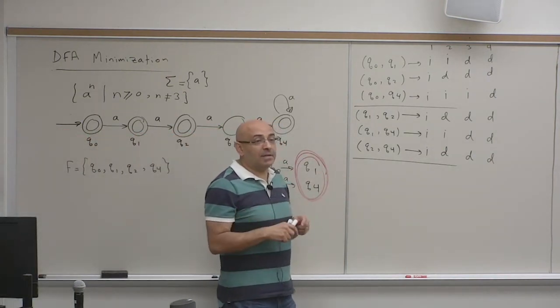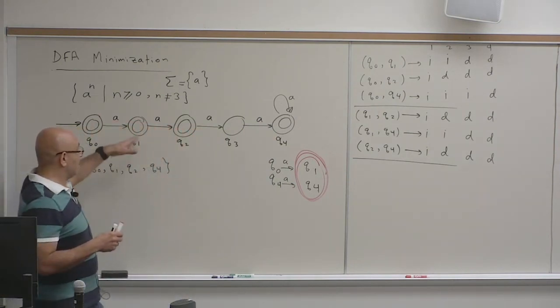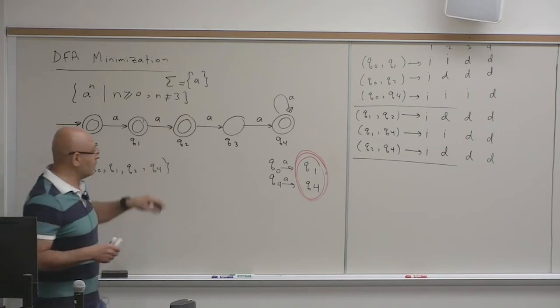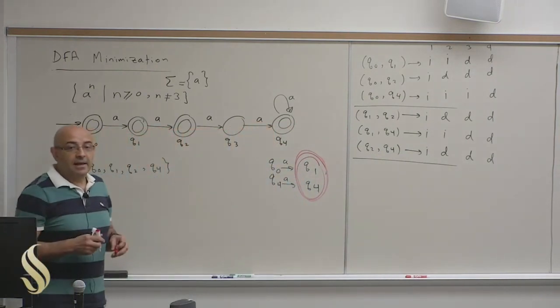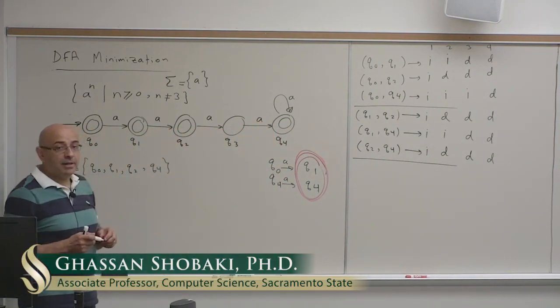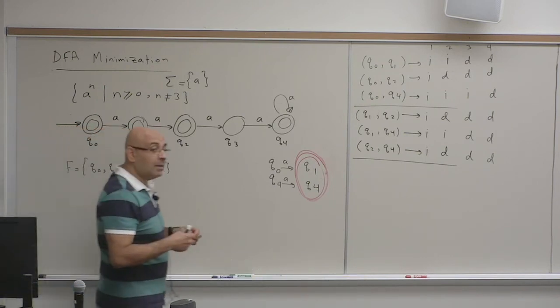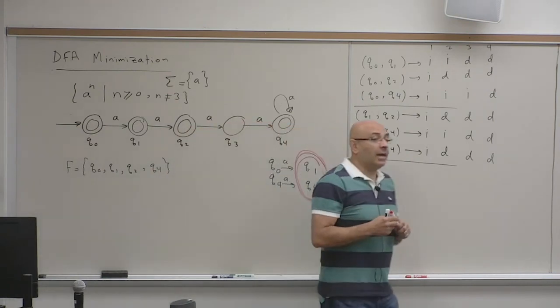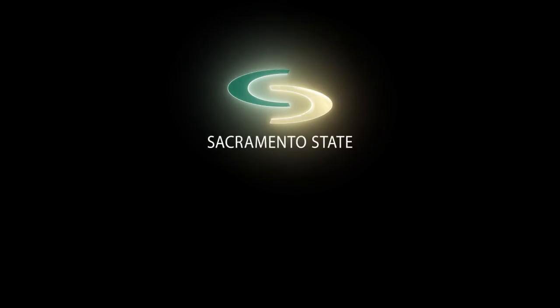What does this mean from a DFA minimization point of view? You cannot minimize it — there are no equivalent pairs of states. The algorithm iteratively detected that all states are distinguishable, even though it initially assumed they were all equivalent. Therefore, this is a minimal DFA.